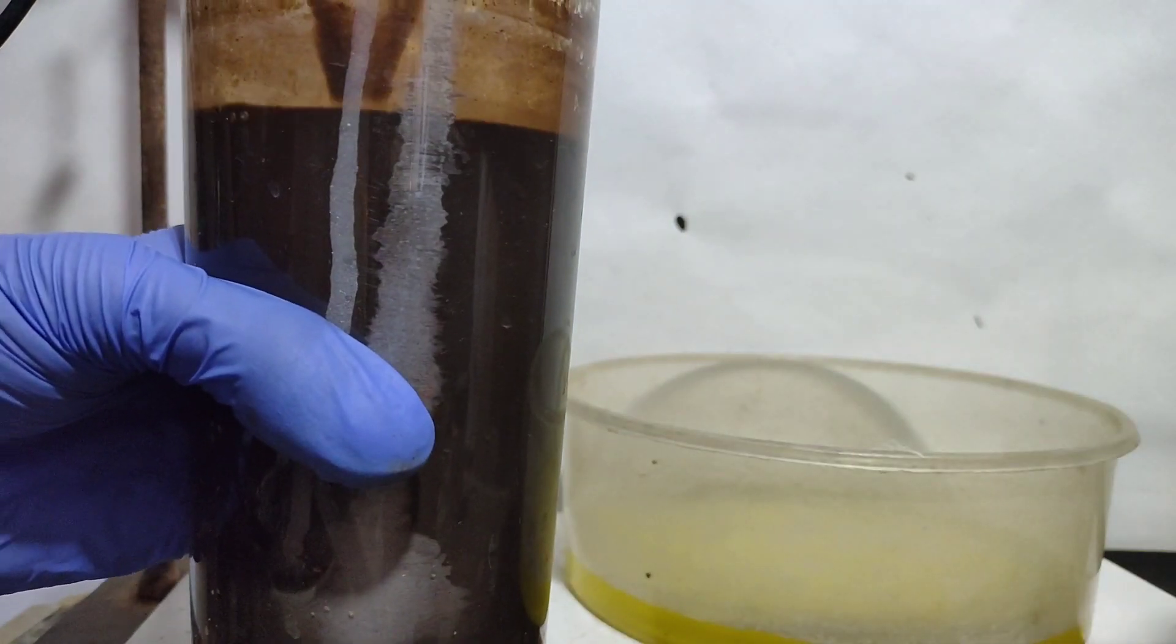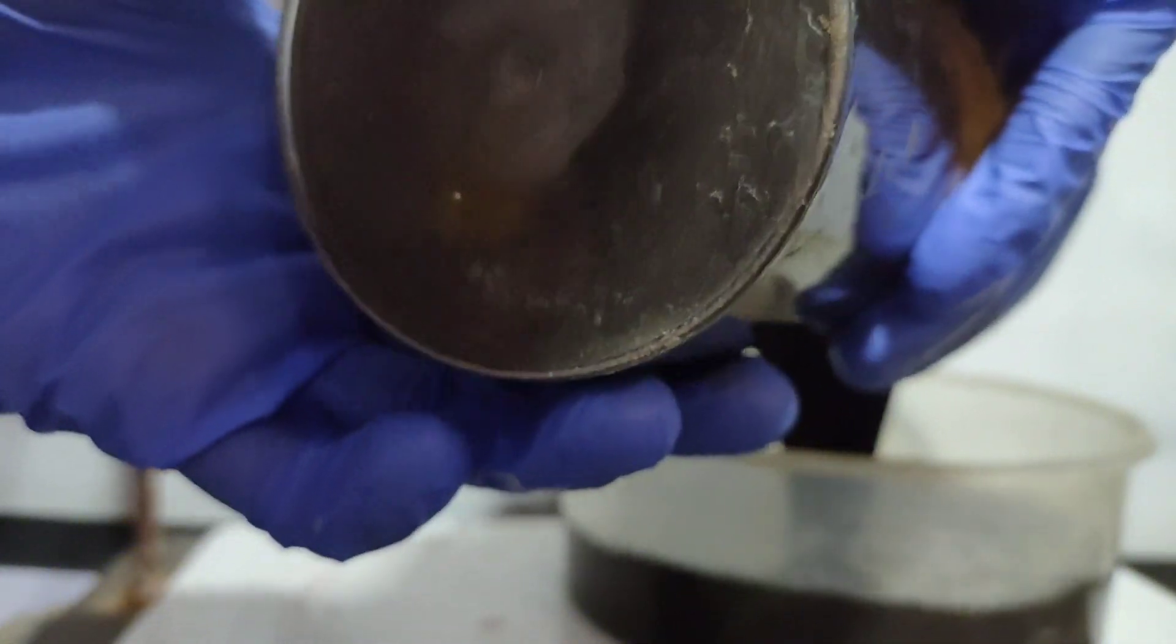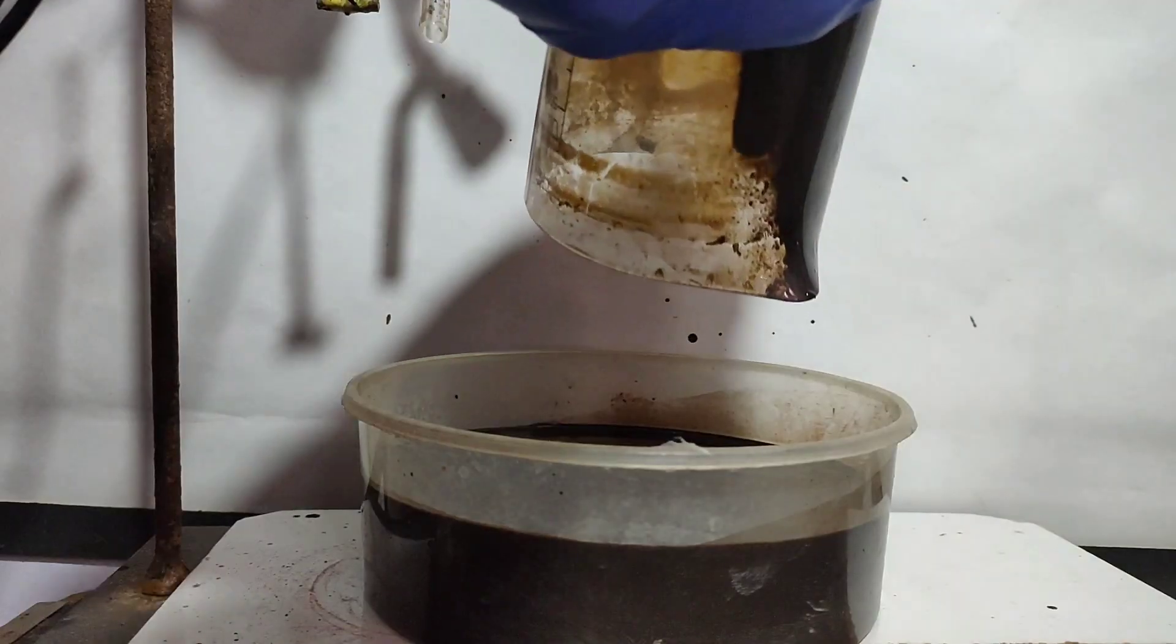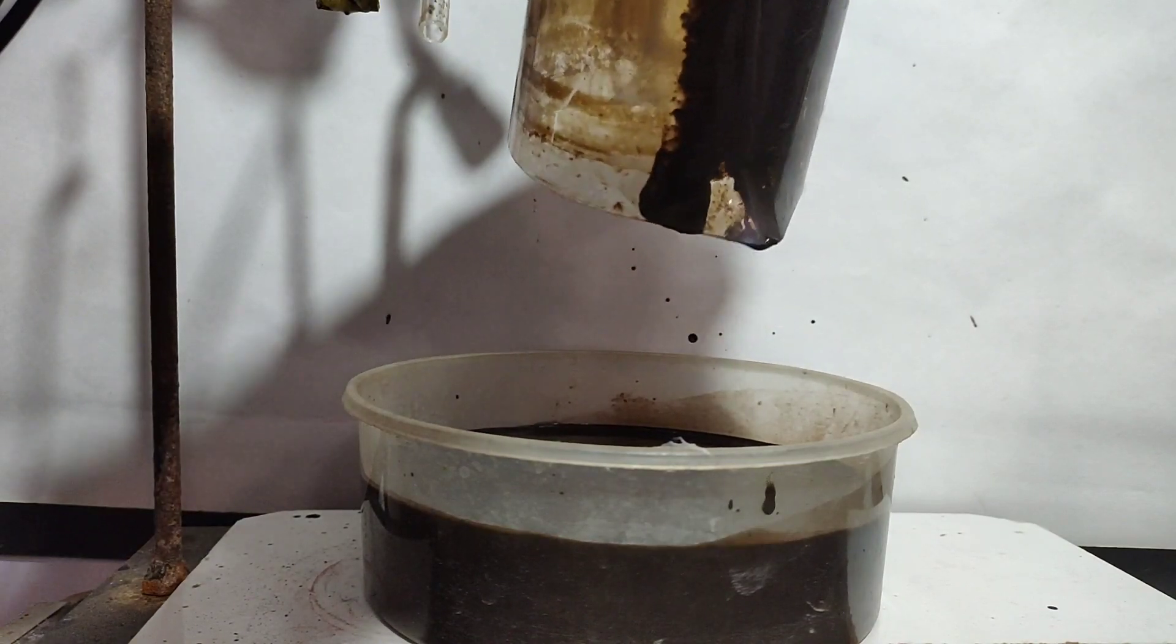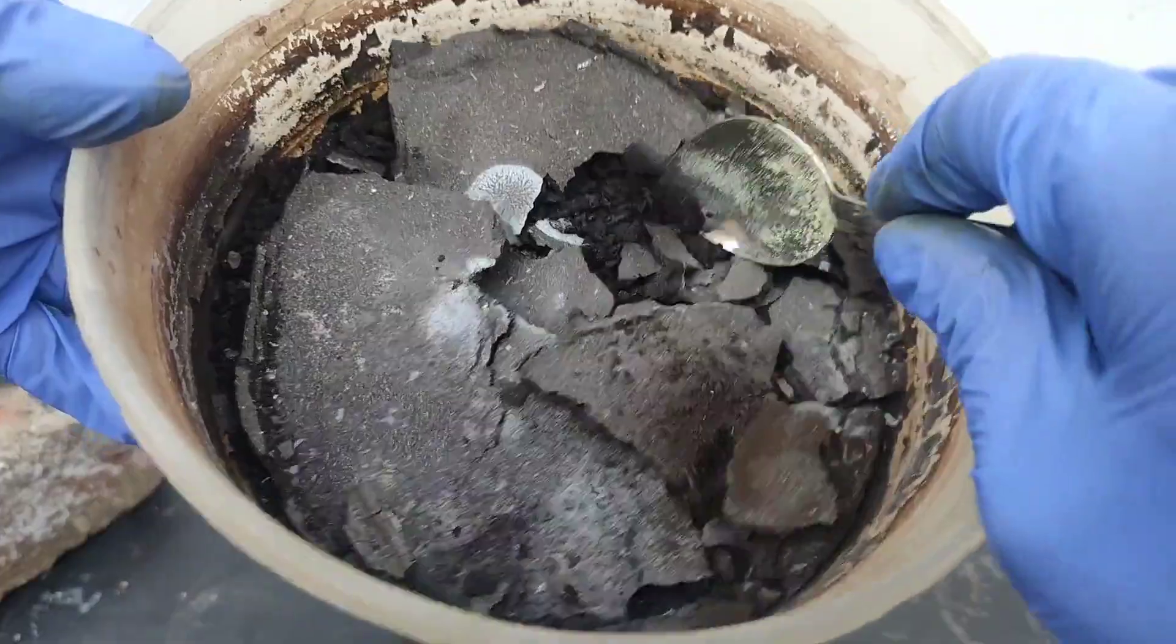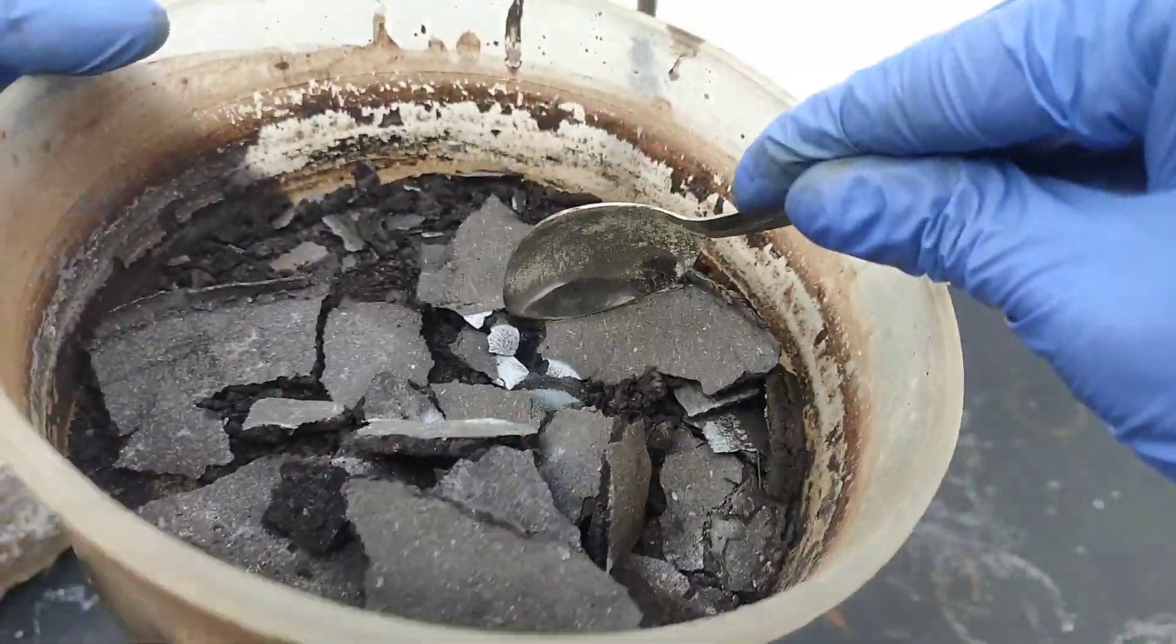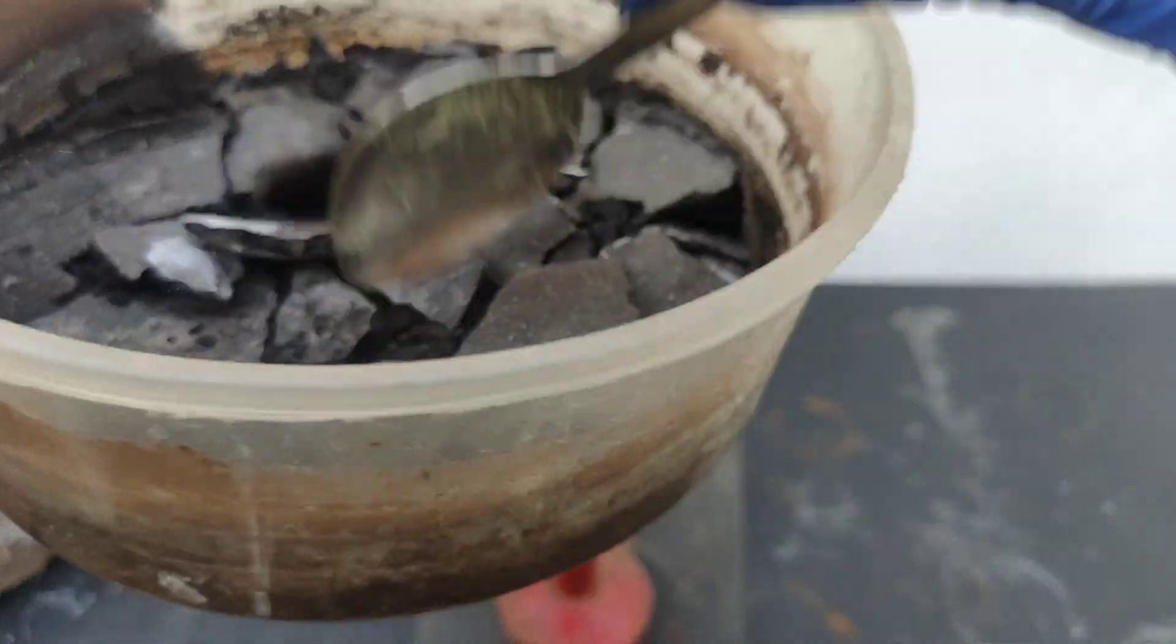This is also used in the manufacture of potassium dichromate from chromate ore. I transferred all the suspension into my 1 liter trough and left it in the sun to evaporate to dryness. After few days, all the solution dried up. I crushed these chunks and transferred this powder into a steel bowl.